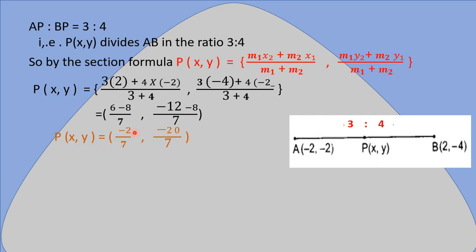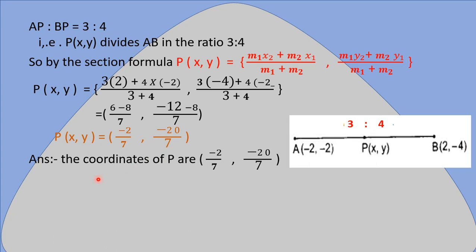After solving, we get x = -2/7 and y = -20/7. So the coordinates of point P are (-2/7, -20/7), which divides line segment AB in the ratio 3 : 4. Remember: when the ratio is given as AP = (3/7)·AB, transpose AB to get AP/AB = 3/7, solve for the actual ratio (3:4), then apply the section formula to find the coordinates.